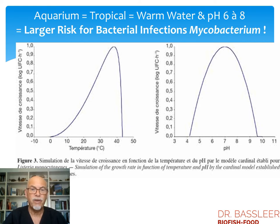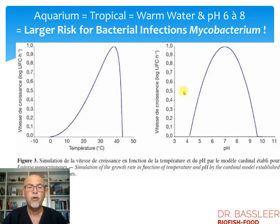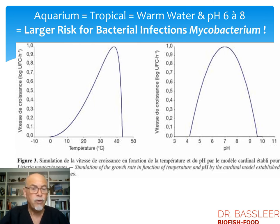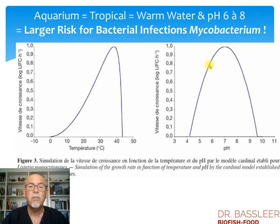What is typical for bacterial infections like mycobacterium? There is a large risk in our aquaria because our aquarium is tropical — warmer temperatures are very favorable for the bacteria, and they grow much better at higher temperatures. Also at pH between 6 and 8, there is maximal growth for those bacteria. So if you're a breeder of discus fish, bettas, or Apistogrammas and love to breed at high temperature and pH around 5 or 6, it is a maximum opportunity for mycobacterium to grow. There is a larger risk when you keep fish in these circumstances.